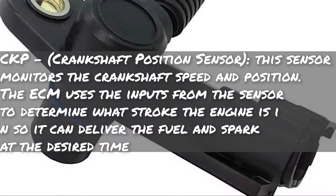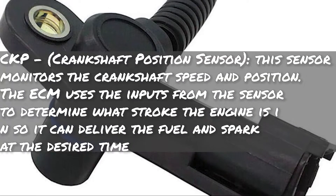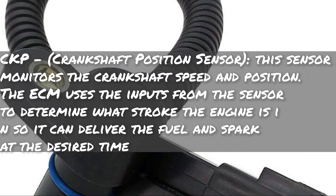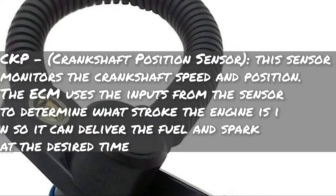The first acronym is CKP, which stands for Crankshaft Position Sensor. This sensor monitors crankshaft speed and position. The ECM uses inputs from this sensor to determine what stroke the engine is in, so it can deliver fuel and spark at the desired time — you don't want spark firing outside the combustion cycle.